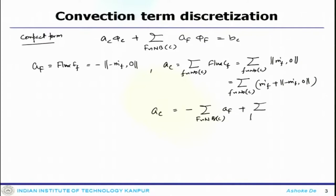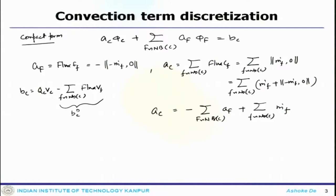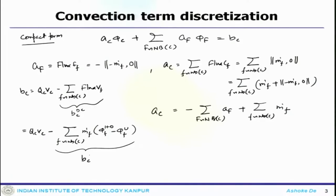The source term looks like B_C = Q_C V_C − Σ_F flux_VF, which is Q_C V_C minus the correction terms from deferred correction. This term is an extra term arising due to the deferred correction procedure, and it is represented as a source term due to deferred correction.